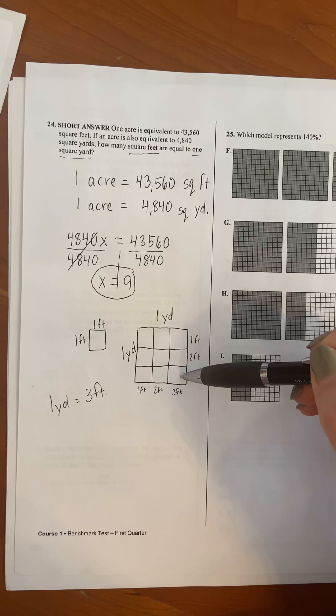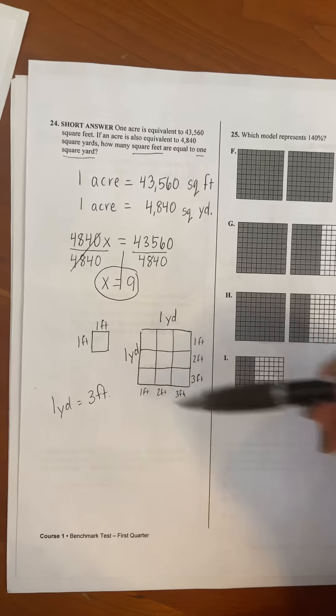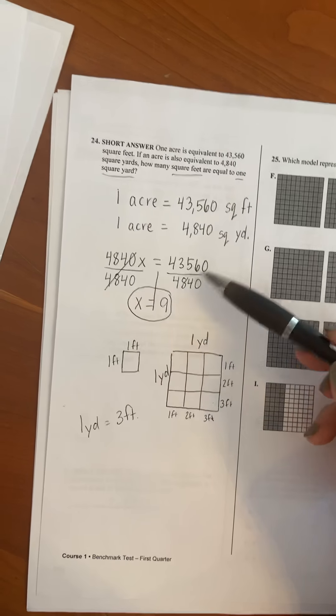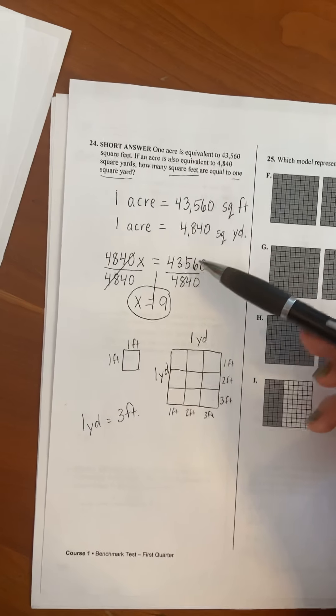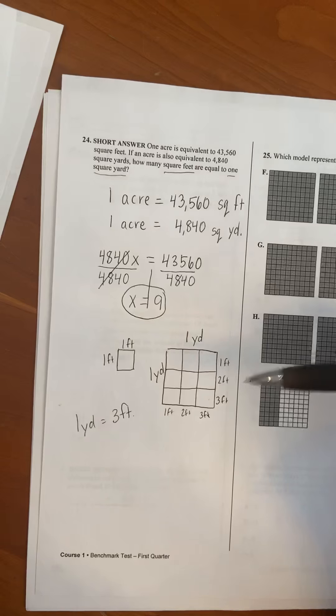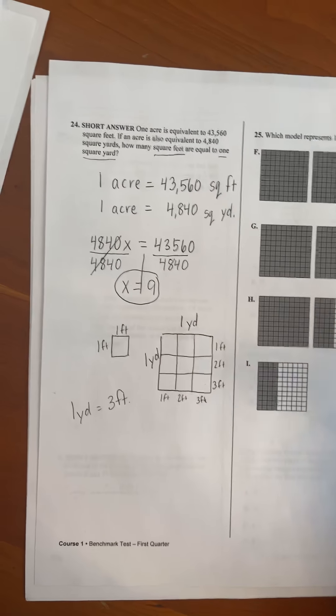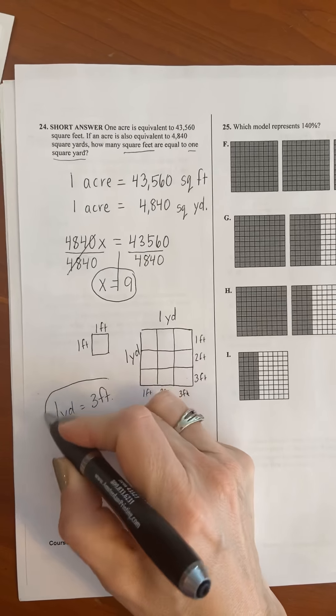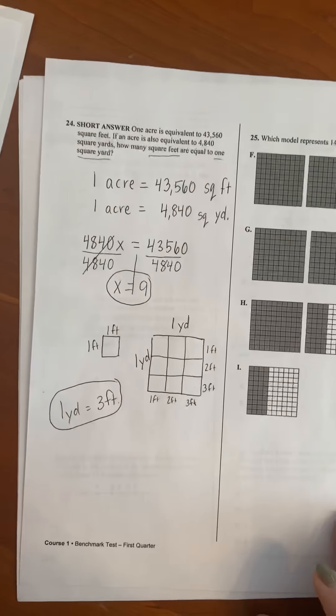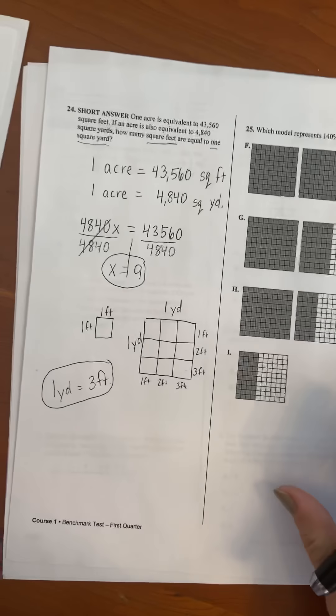So one square yard is the same as nine square feet. And that's what we got up here by using these big numbers. But you really didn't need any of this to know that one square yard would have nine square feet in it. This was the most important thing you needed to know. That one yard has three feet in it.